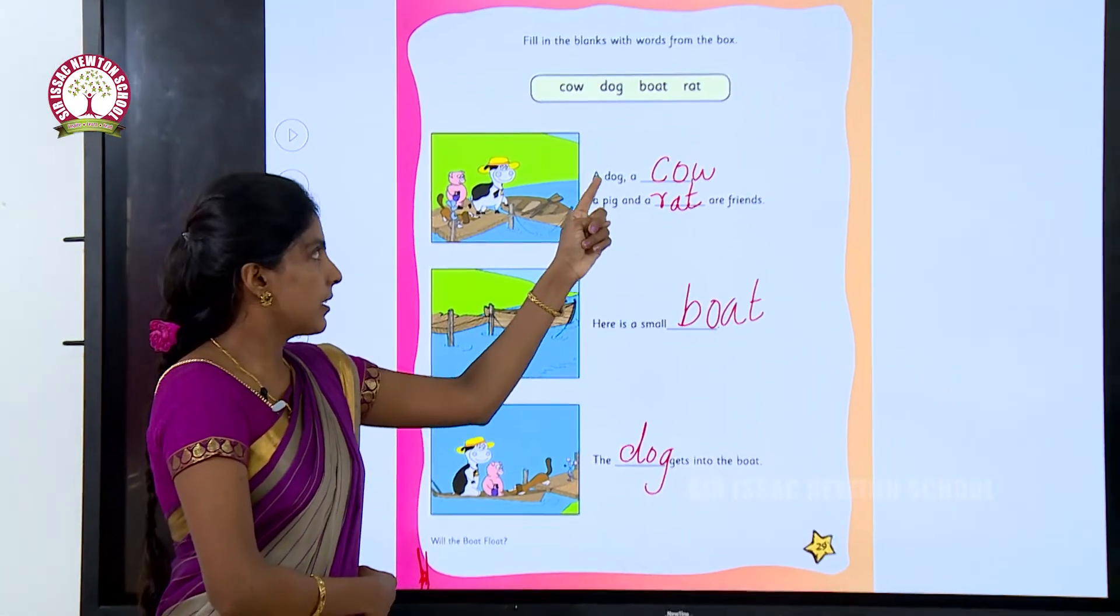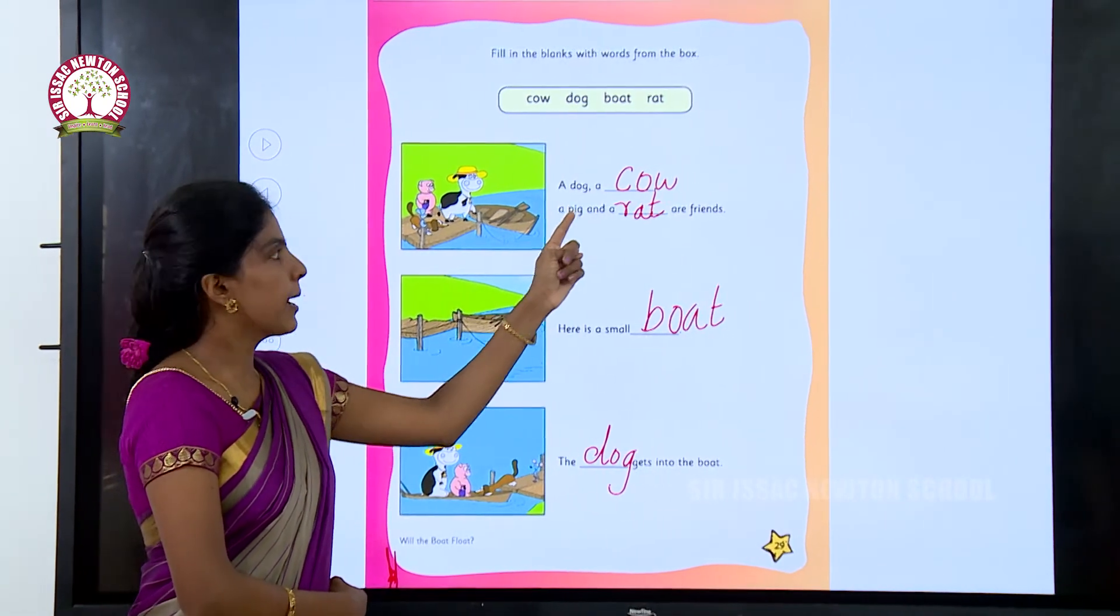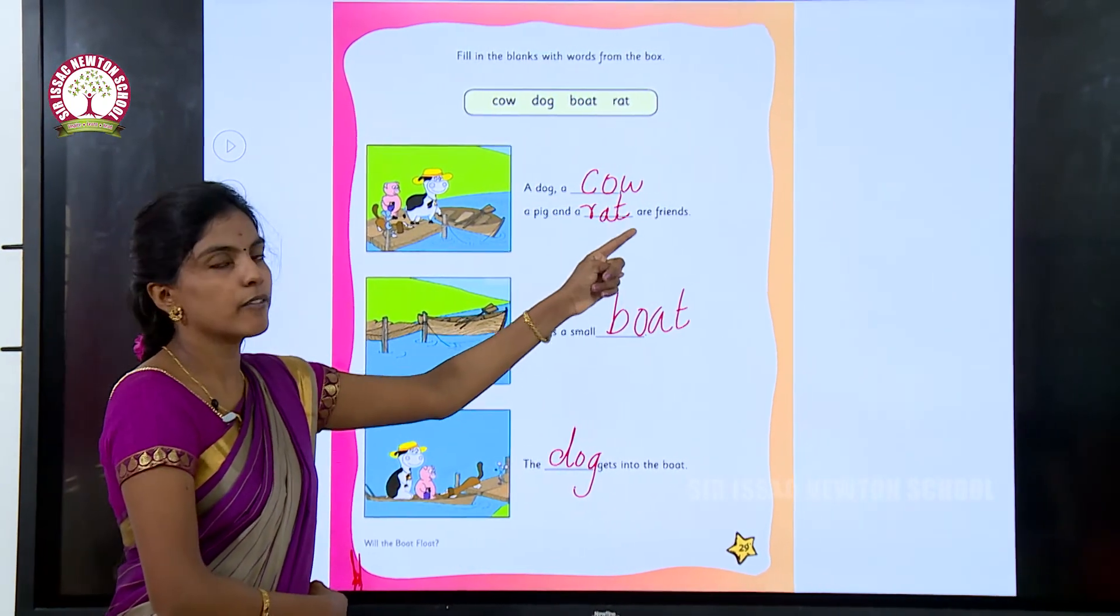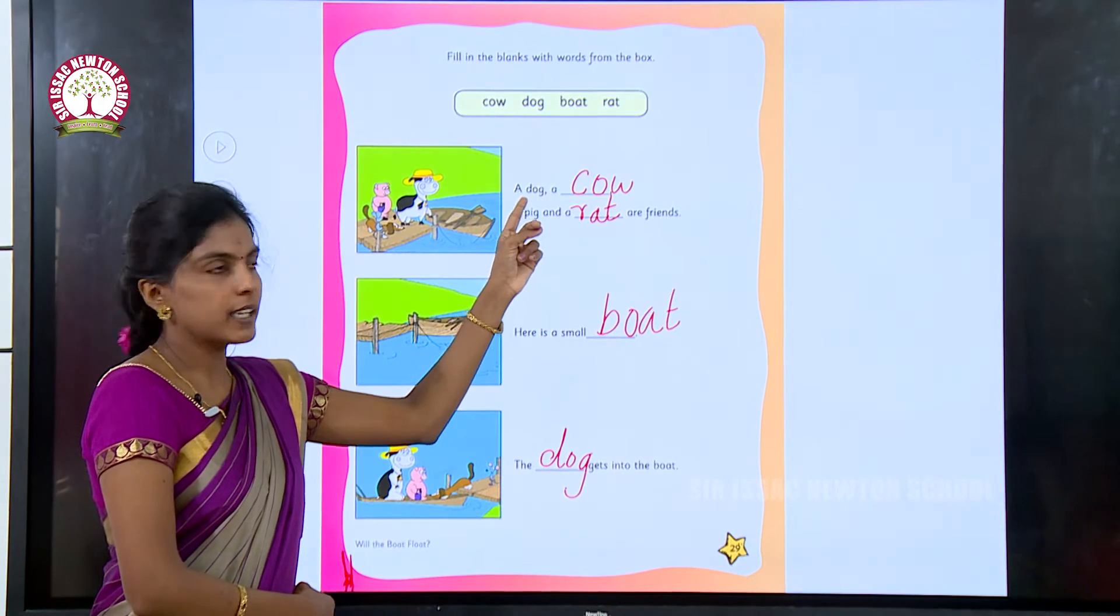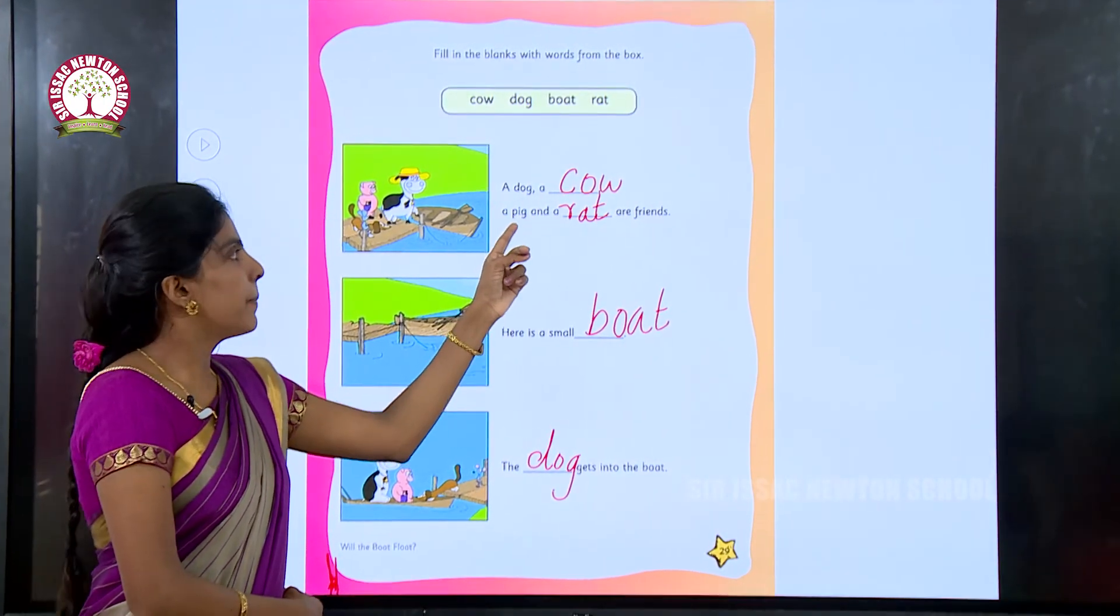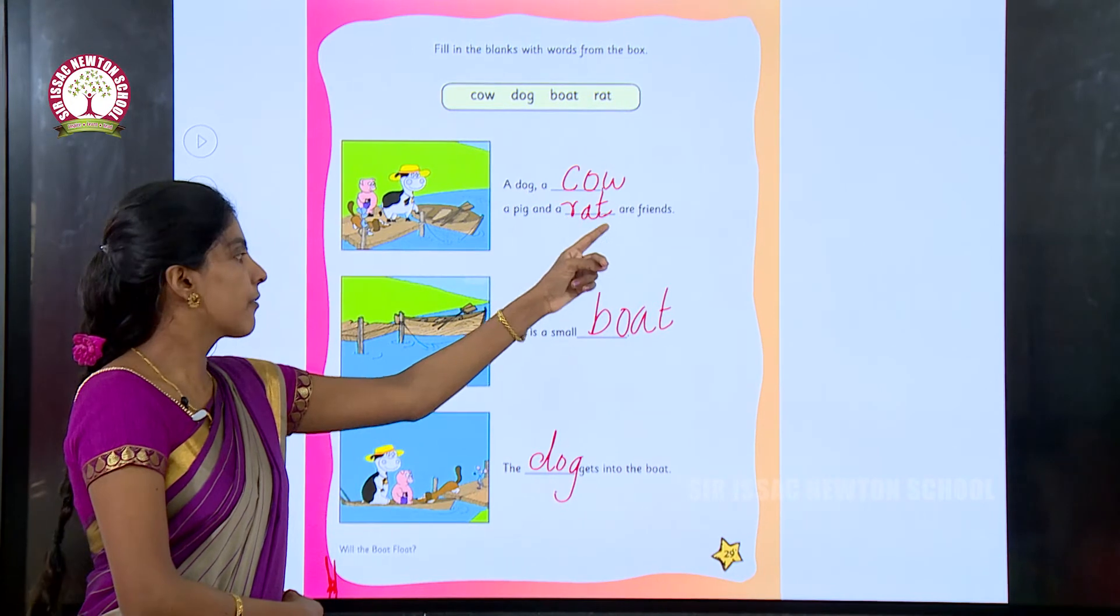Shall we read? A dog, a cow, a pig and a rat are friends. Repeat with me. A dog, a cow, a pig and a rat are friends.